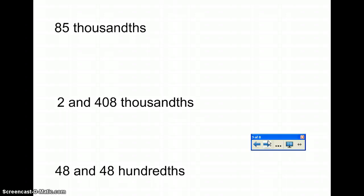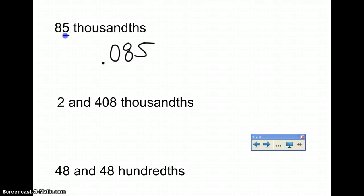Now these are numbers written in words that we have to convert into standard form. For 85 thousandths, you have to look at the final number — that 5 has to fall into the thousandths category. So you put decimal 0, 8, 5. You can double-check this by going back to your place value chart: tenths, hundredths, thousandths. So 85 thousandths looks like 0.085.